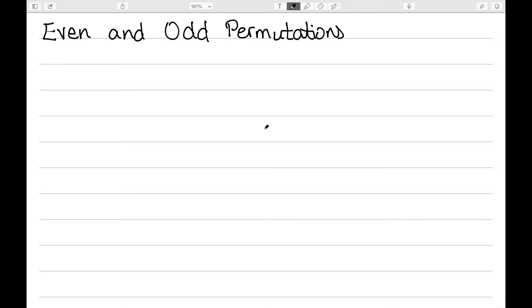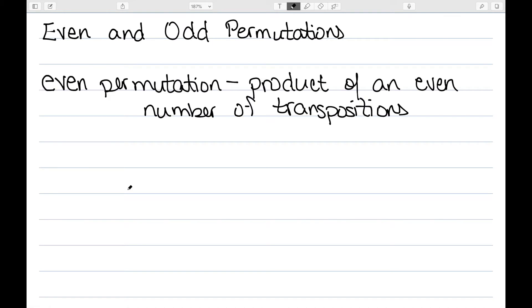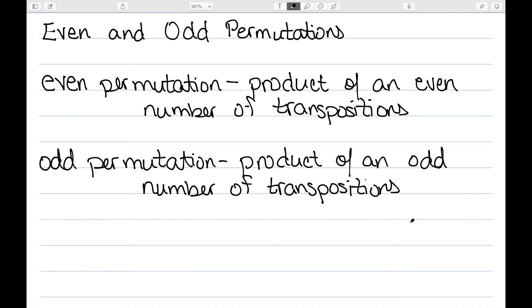In this video, I want to look at what's known as even and odd permutations. I'm going to call a permutation even if it is the product of an even number of transpositions. Equivalently, we'll call a permutation odd if it's the product of an odd number of transpositions.